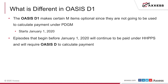What's the difference between OASIS D and OASIS D1? Primarily, the biggest change is that OASIS D1 makes certain M items optional since they're no longer used to calculate PDGM points or PDGM payment. There are several OASIS items that under Home Health PPS currently generate clinical, functional, and service utilization scores. Since those are no longer going to come from the OASIS — other than the functional — we don't need to answer those items anymore. Beginning January 1st, 2020, certain items will be optional to answer in the recertification.